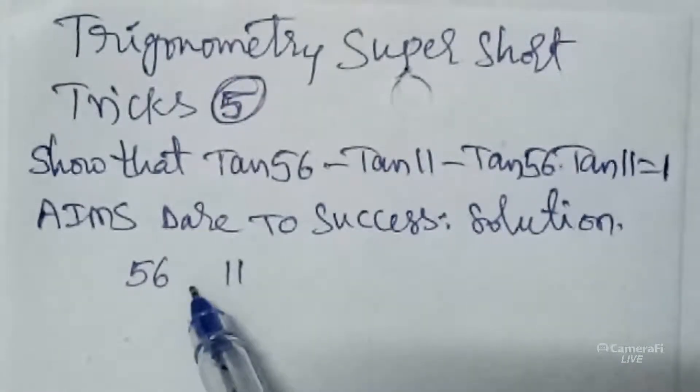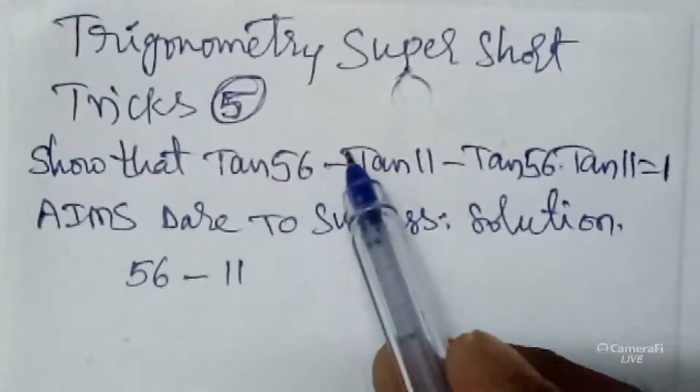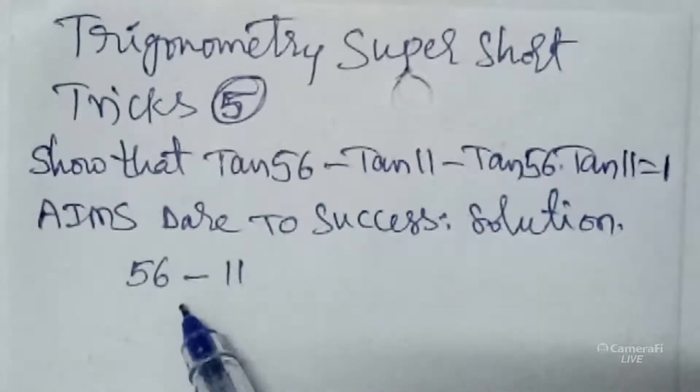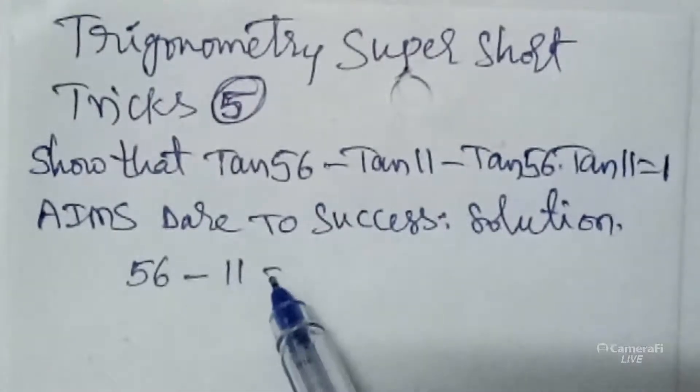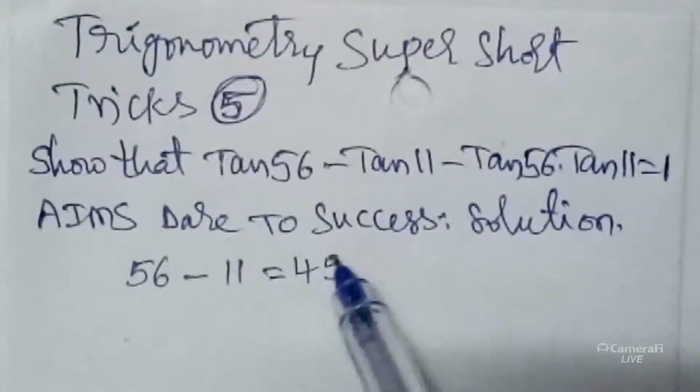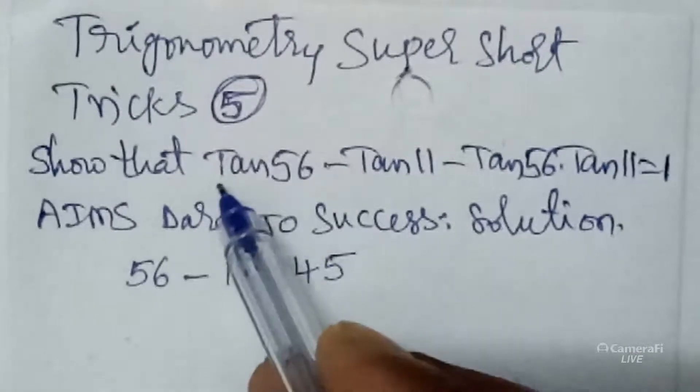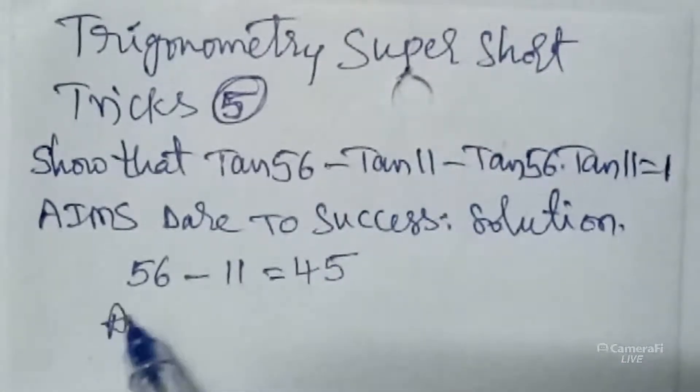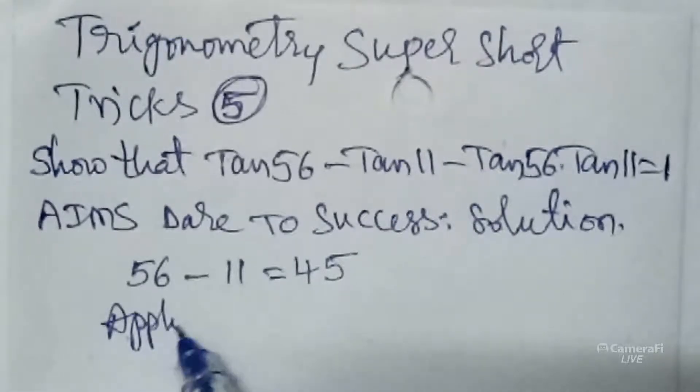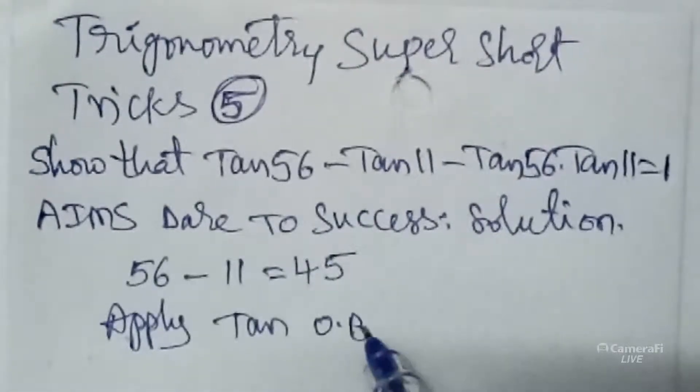For example, if you have here plus, you can write plus. So 56 minus 11 is how much, my dear students? 45. And the question is in terms of tan, so you can apply tan on both sides.